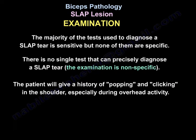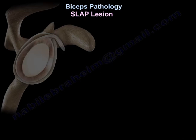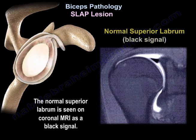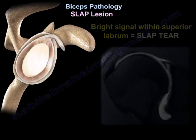The majority of tests used to diagnose a SLAP tear are sensitive, but none is specific. So there is no single test that can precisely diagnose a SLAP tear. The examination is non-specific. The patient will give a history of popping and clicking in the shoulder, especially during overhead activity. The MRI will show bright signal within the superior labrum as seen in the coronal MRI view.